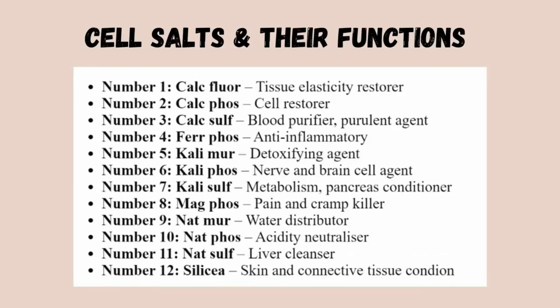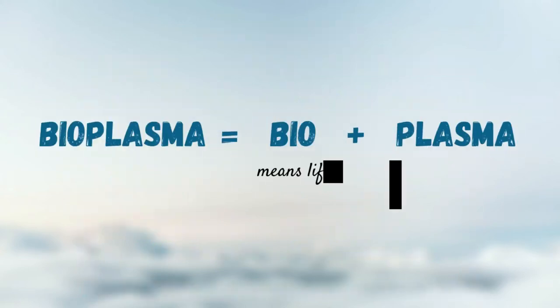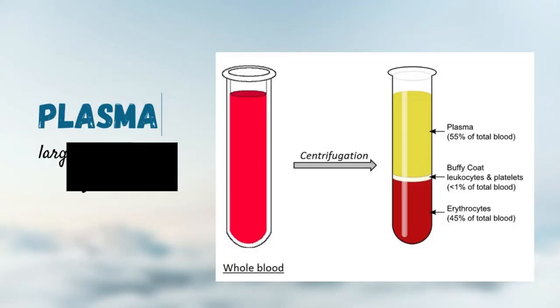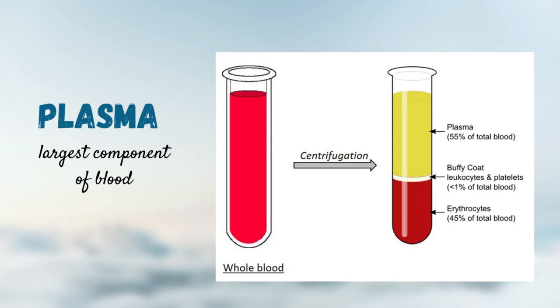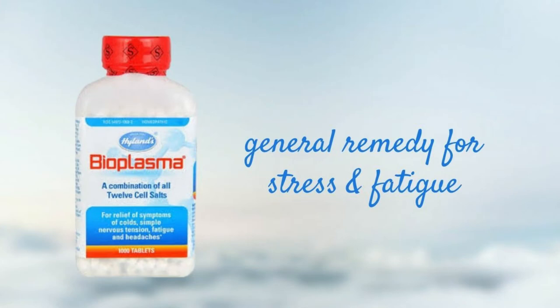Each salt on this list can be used on its own or in combination to treat a wide variety of ailments. When you combine all 12 salts into one, that's called bioplasma. 'Bio' means life, and 'plasma' is the largest component of your blood. Taking bioplasma is like a general remedy.